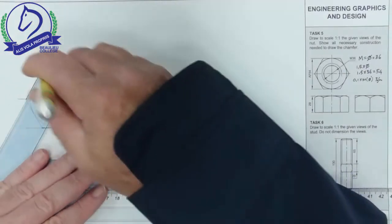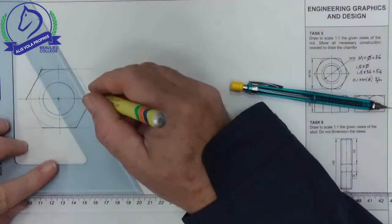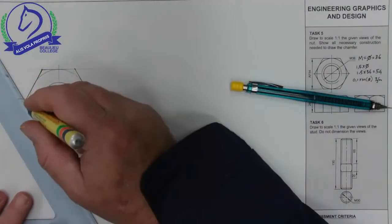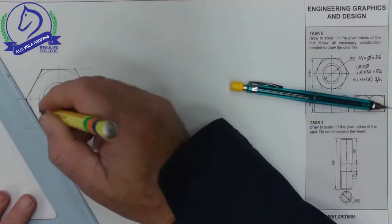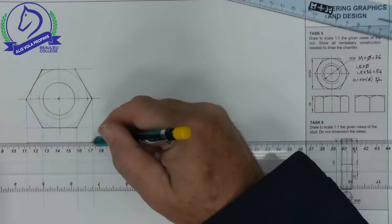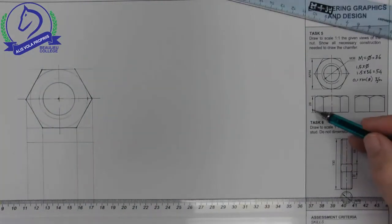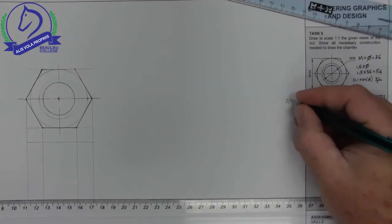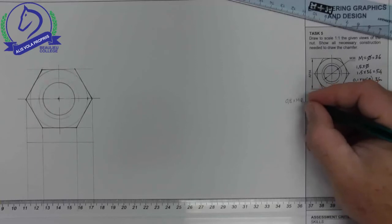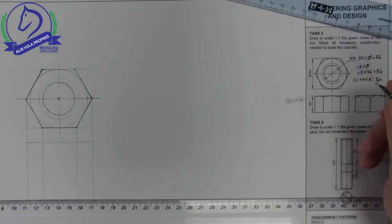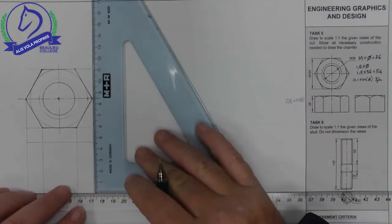Now I'm going to project our lines down to get the front view. And what they refer to as the three faces of the nut. I've projected my lines down and I'm leaving about 10mm space. Now they tell us that this height is 29. Now if I don't give you the height you need to know the formula. The formula is 0.8 for a nut times that M value or the diameter value, which gave you an answer of 28 point something which they've rounded off to 29.